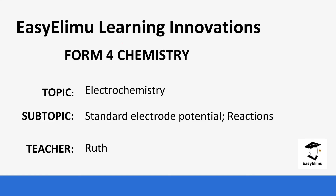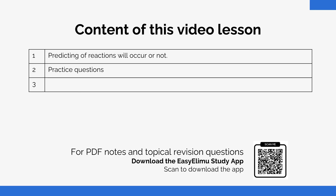Welcome to EZLM Learning Simplified. My name is Ruth and today we are going to be learning on the topic electrochemistry. Specifically, we are going to be looking at standard electrode potentials and how we can use them to predict whether a reaction will occur or not. So let's dive in and see how that happens.